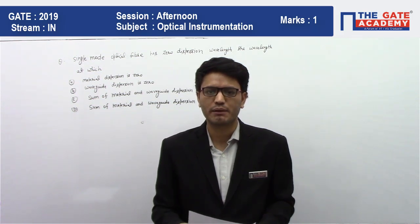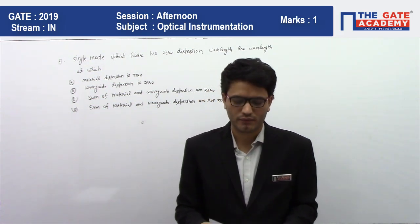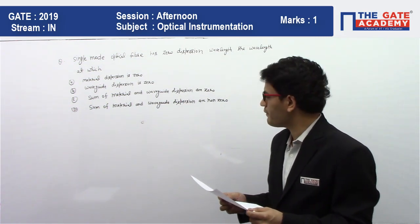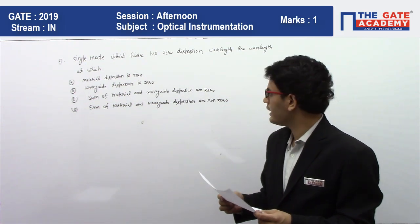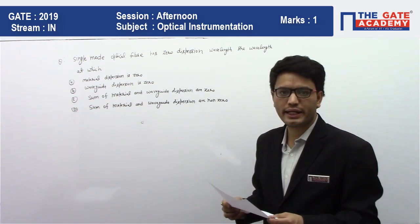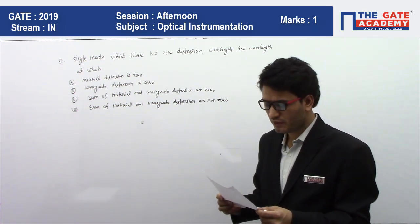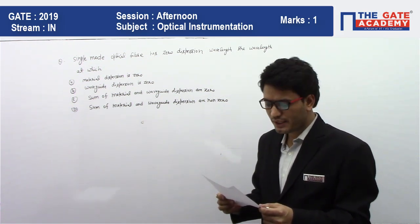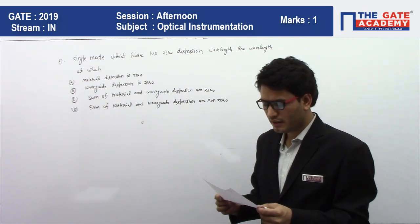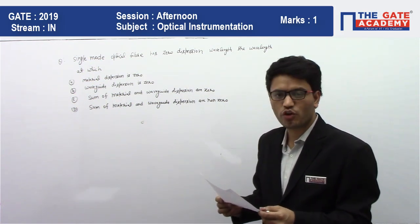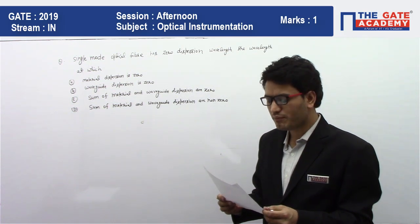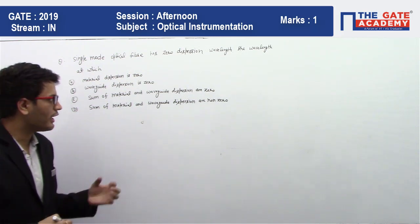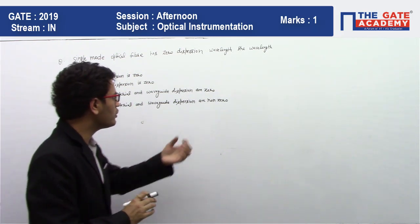The chapter name is Optical Fiber. The question is: a single-mode optical fiber has zero dispersion wavelength at which — first option: material dispersion is zero; second option: waveguide dispersion is zero; third option: sum of material and waveguide dispersion are zero; fourth option: sum of material and waveguide dispersion are non-zero.